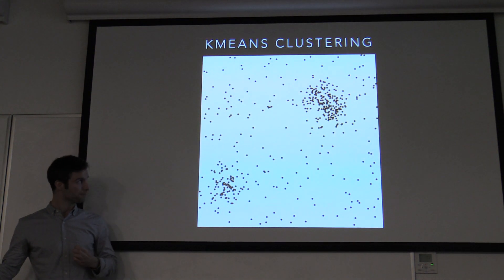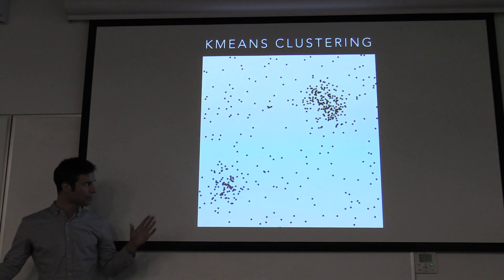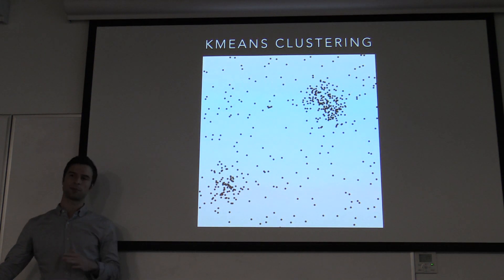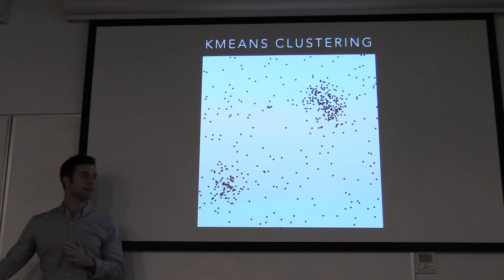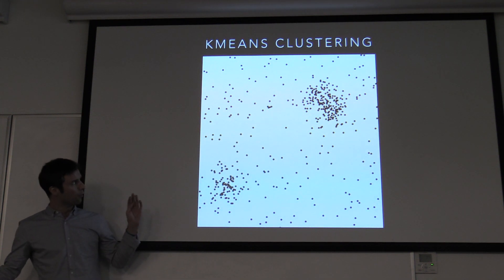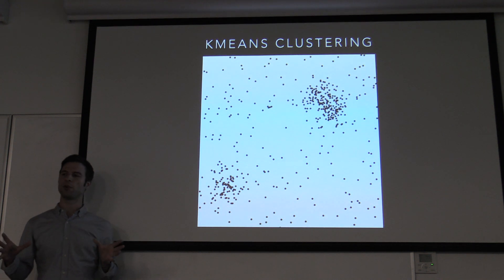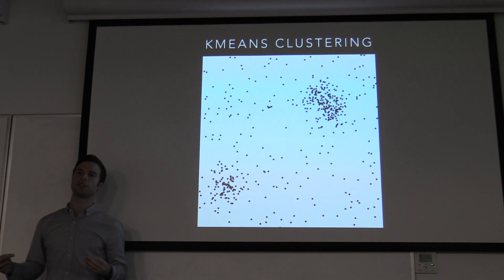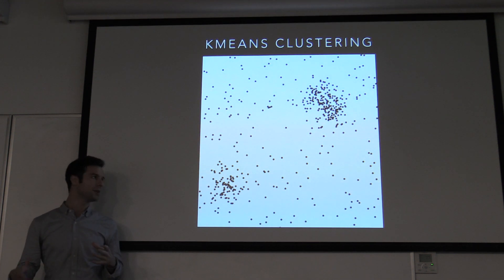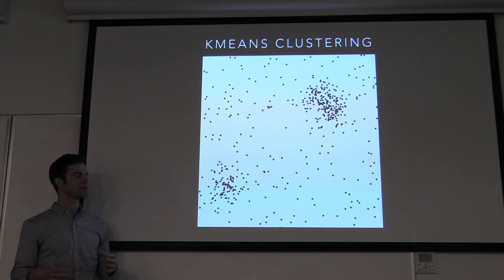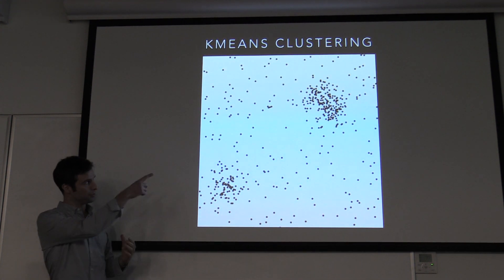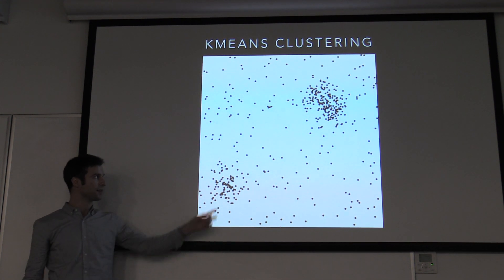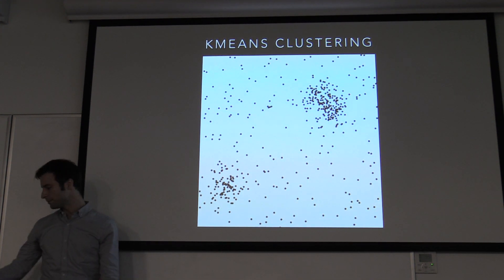So, k-means clustering. I want you to think of these as randomly placed points on a white backdrop, and I want you to try to take these points and put them into a certain number of groups. If you're like me, you look at this and say there are obviously two groups here — there's a group over there and a group right here.